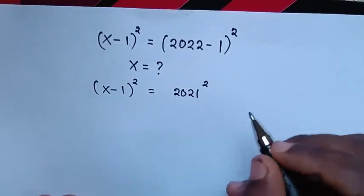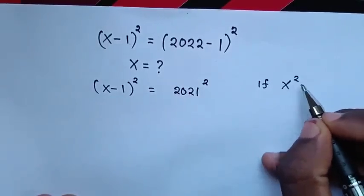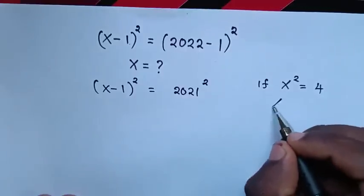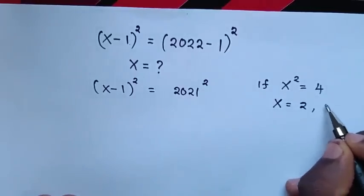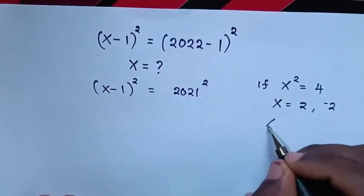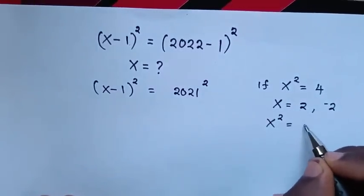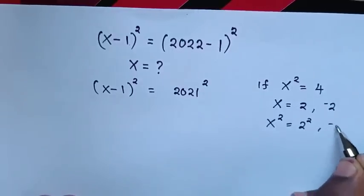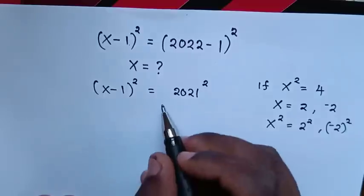Let's note this example: if x² = 4, then x = 2 or x = -2 when you apply square root to both sides. Therefore, x² = 2² or x² = (-2)².